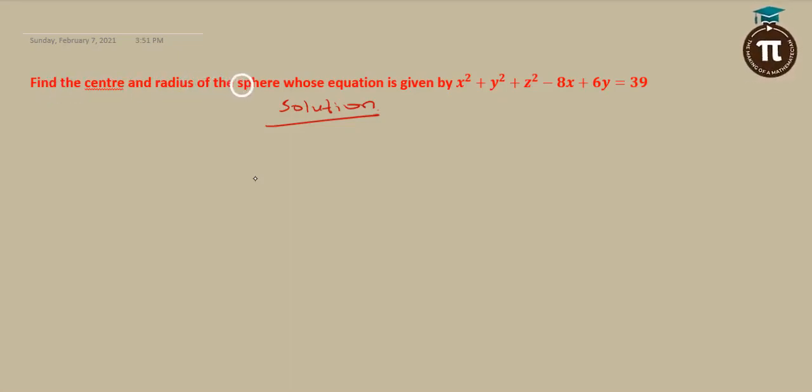Find the center and radius of the sphere whose equation is given by x squared plus y squared plus z squared minus 8x plus 6y equal to 39.